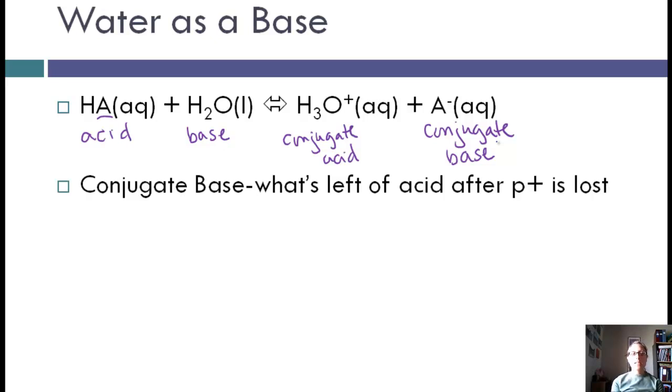The conjugate base is what's left of the acid after its proton is lost. So we took HA, which was our acid, and once it donated the H+, now all we're left with is A-, and that's called the conjugate base.